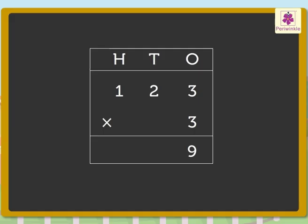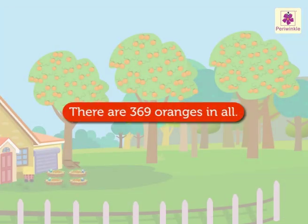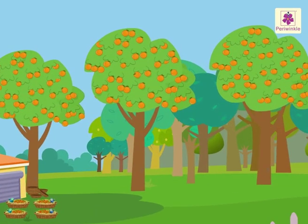Now multiply the digit in the tens place: 2 into 3 is equal to 6. Finally, multiply the digit in the hundreds place, which is 1 into 3 is equal to 3. Wow, there are 369 oranges in all — they look so yummy!